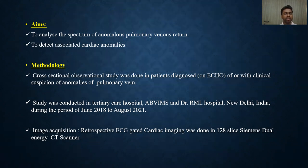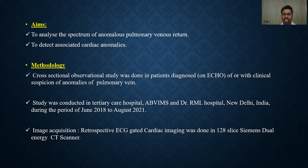This was a cross-sectional observational study done in patients diagnosed with anomalies of pulmonary vein on echo or with clinical suspicion of anomalies of pulmonary vein. The study was conducted at a tertiary care hospital, Dr. RML Hospital in New Delhi, India, during the period of June 2018 to August 2021. Retrospective ECG-gated cardiac imaging was done on a 128-slice Siemens dual-energy CT scanner.